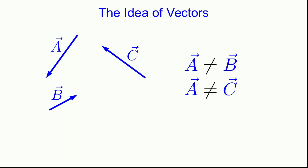But if you take a ruler and check on your screen, you'll notice that I've been very careful to make C the same length as A. It doesn't matter. C is still not equal to A because they point in different directions.